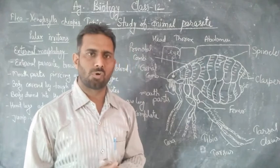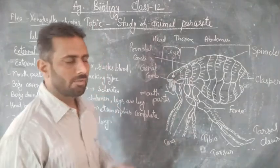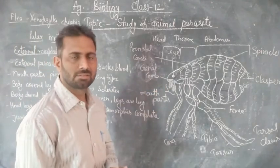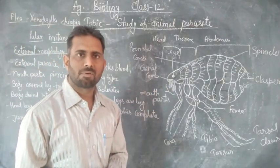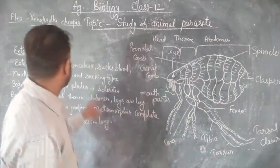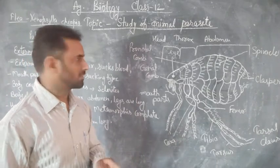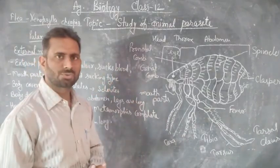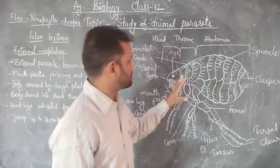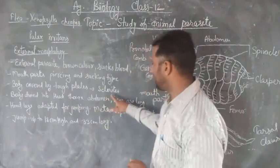The head and thorax are small but the abdomen is very large. The head bears compound eyes and mouthparts. The mouthparts of fleas are piercing and sucking type, with which they suck blood from the host. Its body is covered by hard tough plates called sclerites.